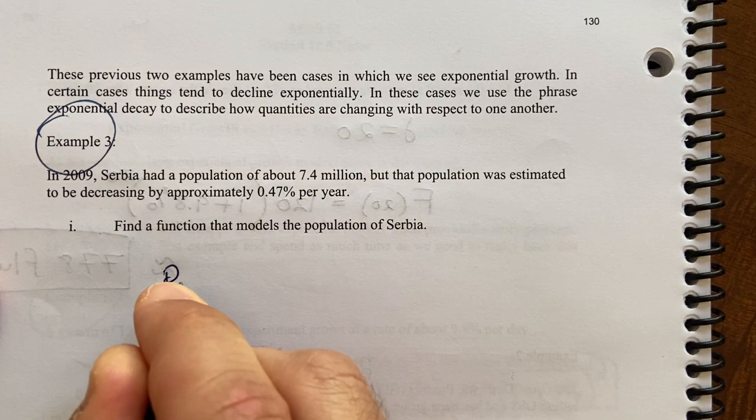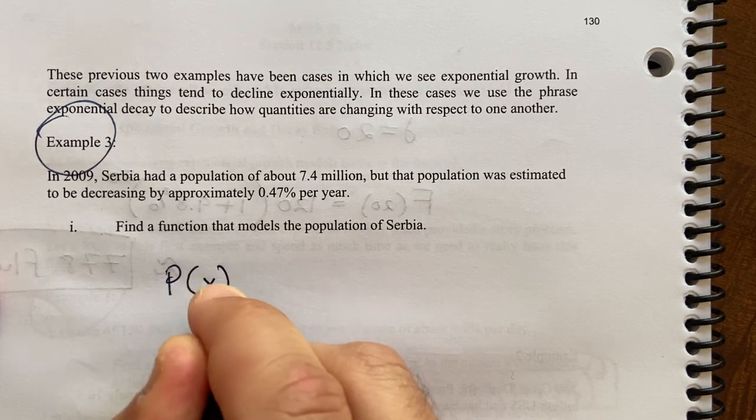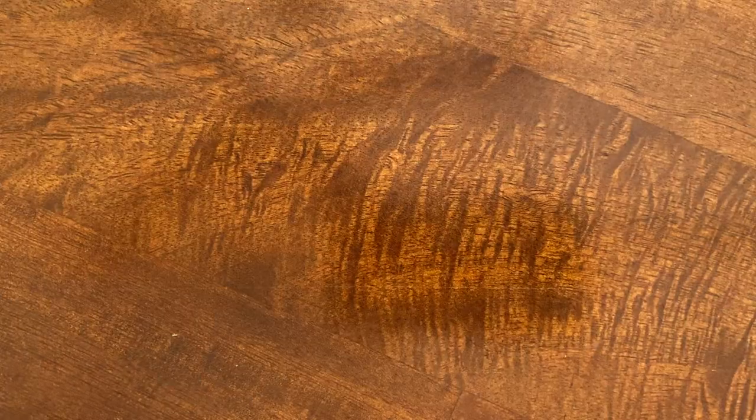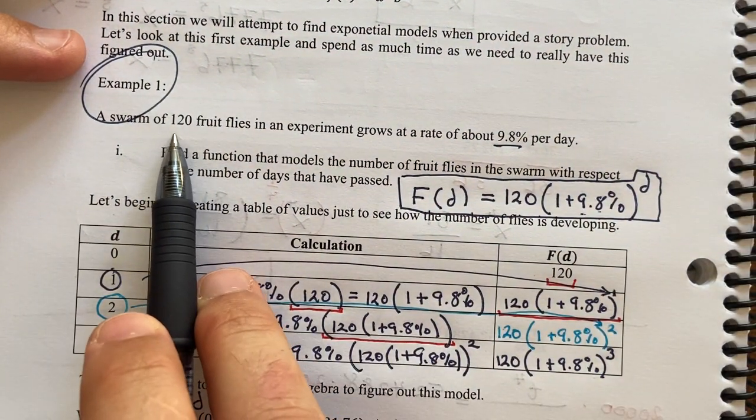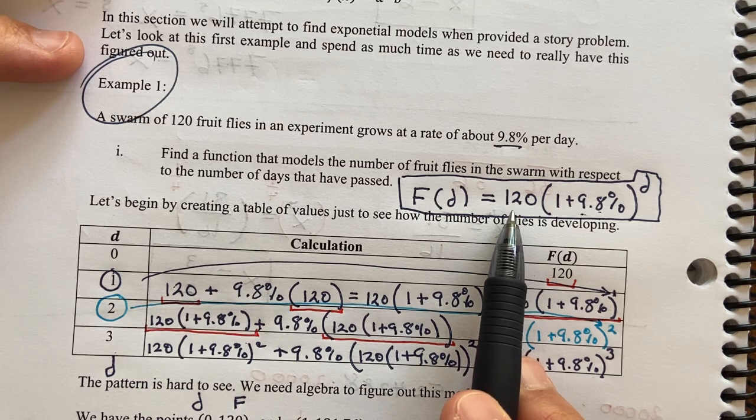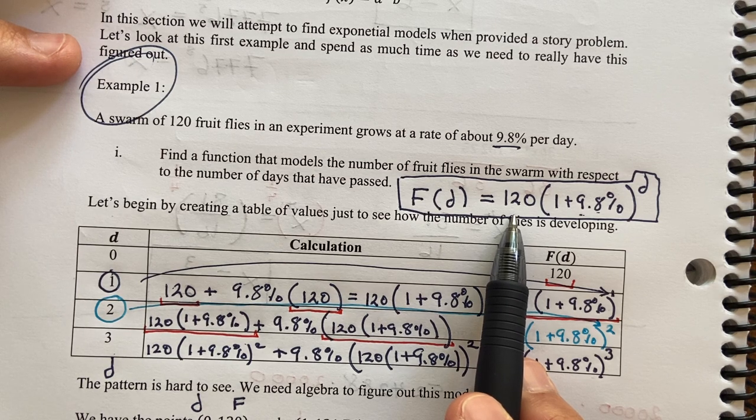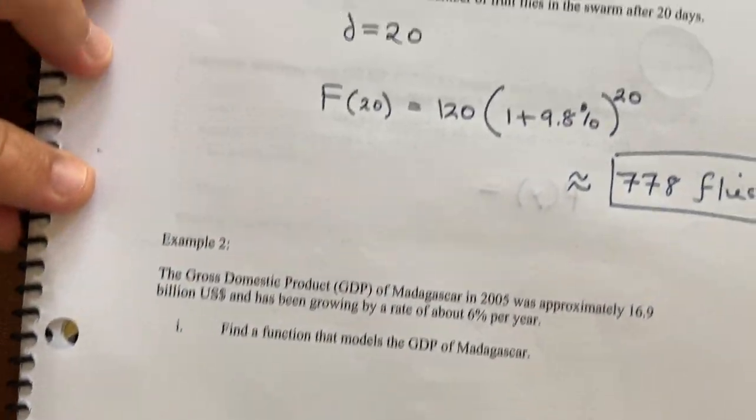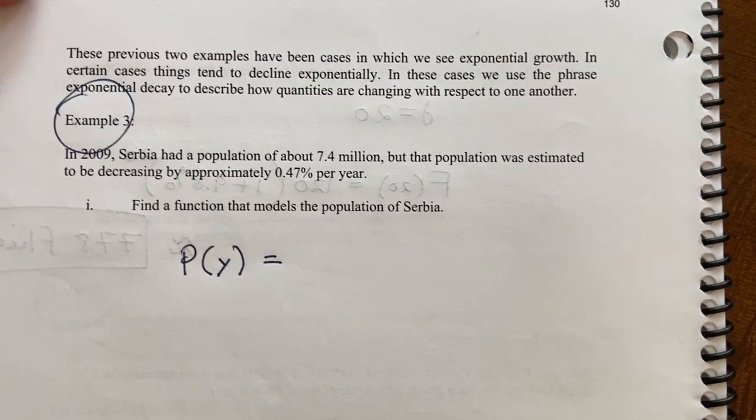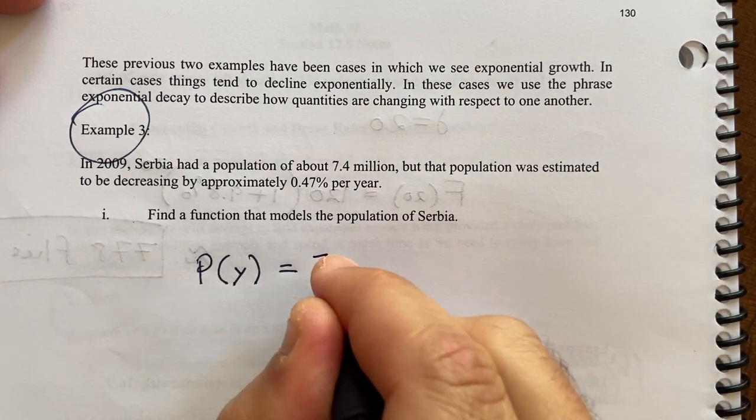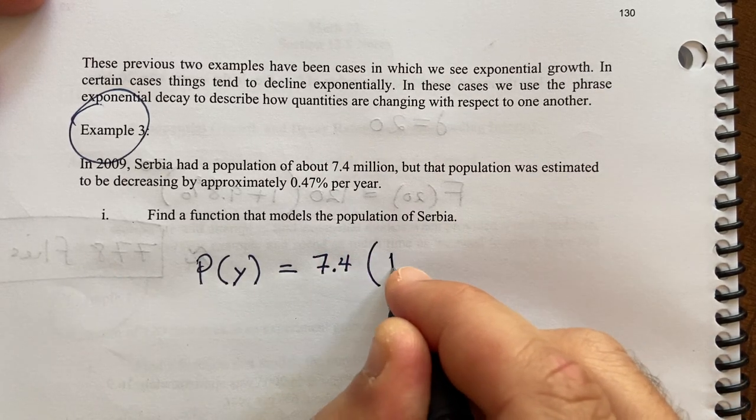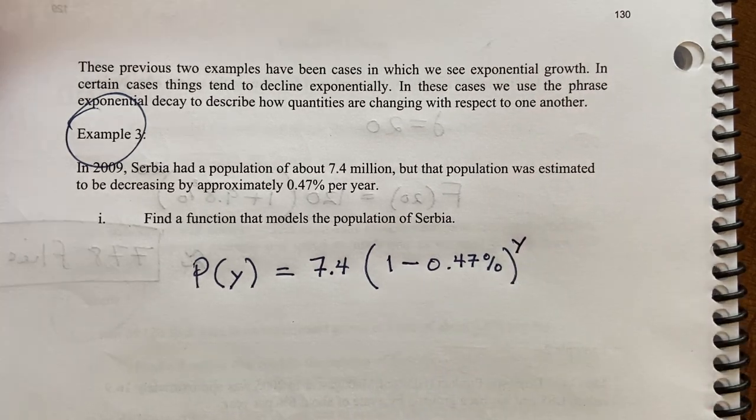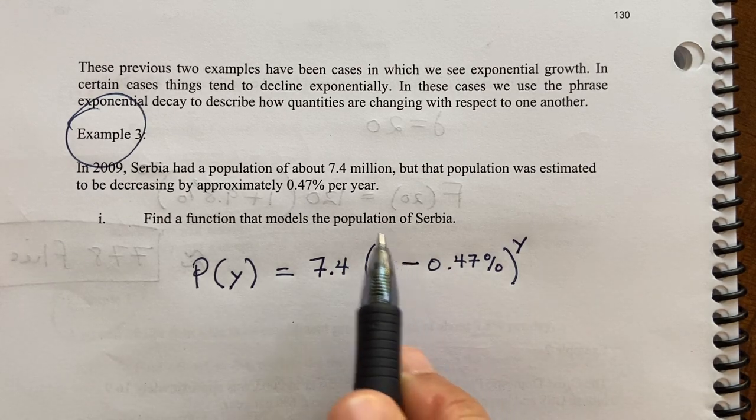So the population as a function of year would be your starting amount. It's no coincidence that we started with 120 and 120 just appeared here. This number is always the starting amount of whatever is changing exponentially, whether it's money or flies or population. So that's 7.4, and that's in millions. And then I would have times 1 minus 0.47%, raised to the year.